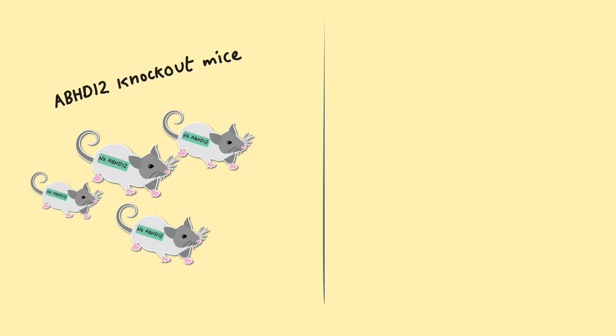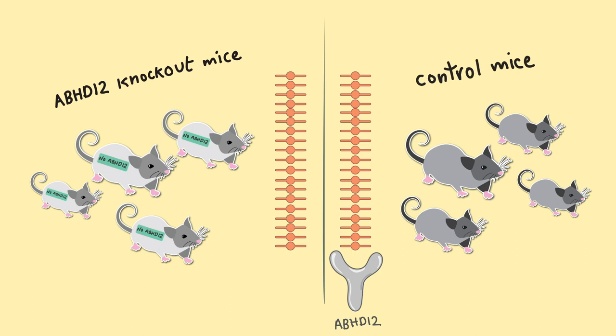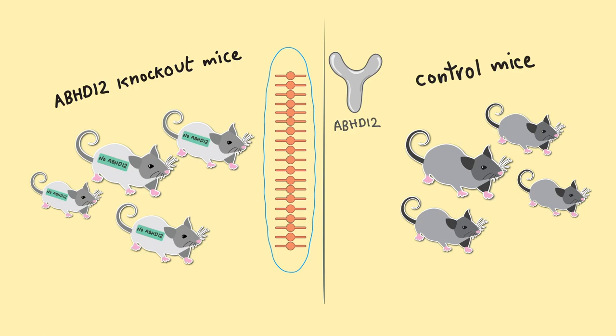When the mice were put under stress, the oxidized phosphatidylserine levels increased in both groups. Then the levels went down in the first set of mice but the second set, without the ABHD12 enzyme, still had elevated levels of oxidized phosphatidylserine.